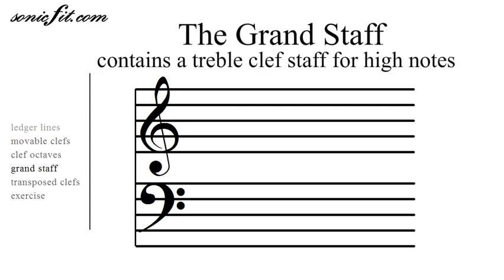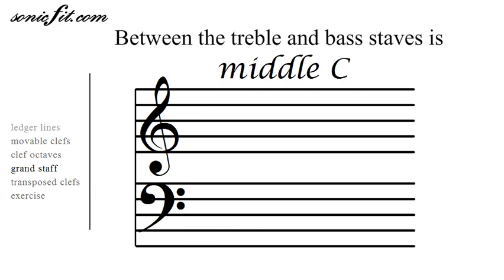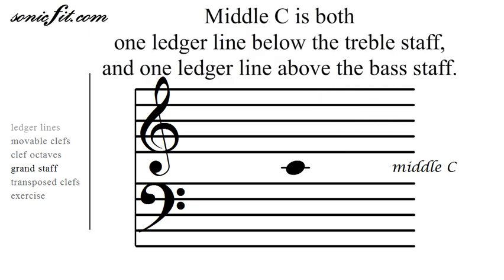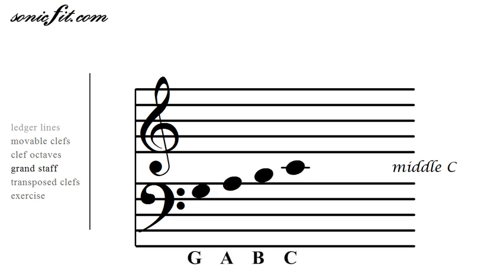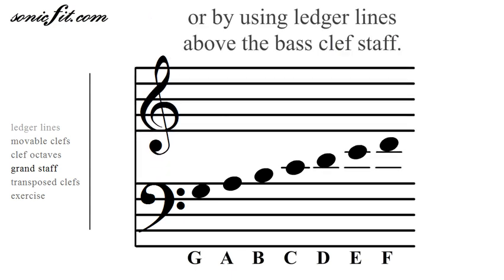The grand staff contains a treble clef for the higher notes and a bass clef for the lower notes. Between the treble and the bass is middle C. It can be thought of as one ledger line below the treble clef as well as one ledger line above the bass clef. Ascending up the bass clef, notes may go higher than C by passing into the treble clef, which is the same as using ledger lines above the bass clef.